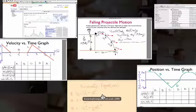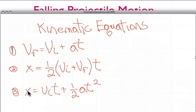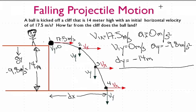To get the time, we use one of our kinematic equations — they all have time in them. We can't use the equations that require the final velocity in the y direction, since we don't know that. So the only equation we can use is the one involving the height of the cliff: 14 meters, initial vy of 0, and acceleration of minus 9.8.